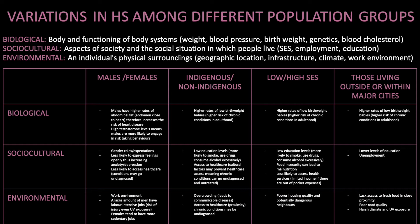Those living outside or within major cities. Those living outside major cities are likely to have lower levels of education and higher unemployment — for example, the closest school might be an hour away, or the closest workplace may be three hours away. In terms of environmental factors, there is likely to be a lack of fresh food in close proximity, potentially poor road quality, harsh climate and UV exposure. Many people living outside major cities have labour-intensive employment on farms or in outdoor areas with limited sun protection.